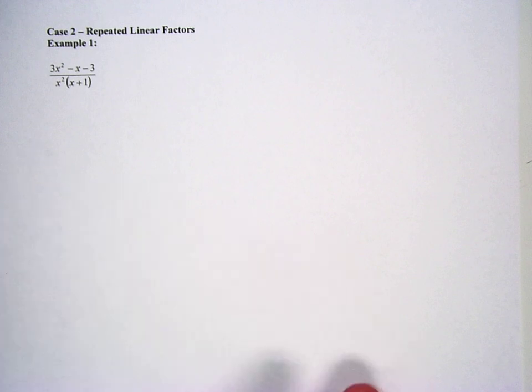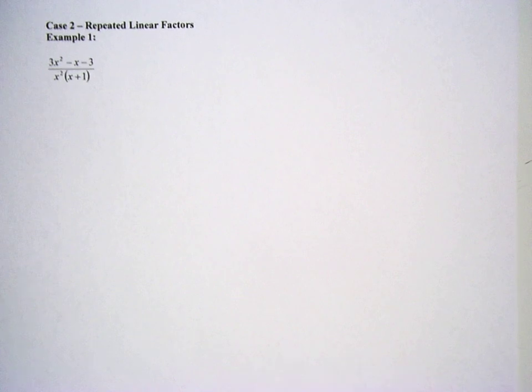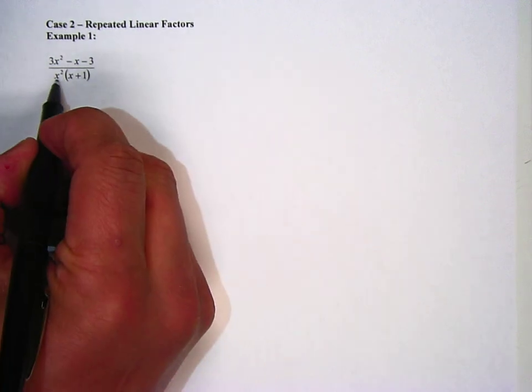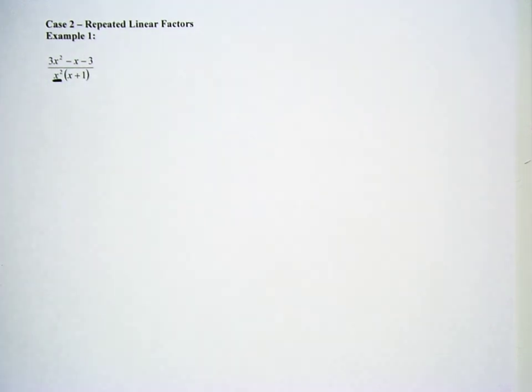So you can see this problem here is 3x squared minus x minus 3 all over x squared times x plus 1. And the repeated linear factor is right here, the x squared. If it was just x, it would be a linear term, but because it's x squared, it's repeated. It's x times x. And so what we're going to do is we're going to set this up slightly different and see how this works out.